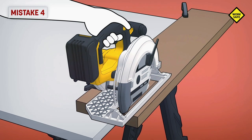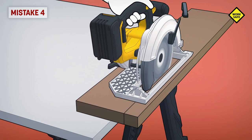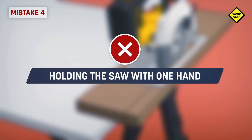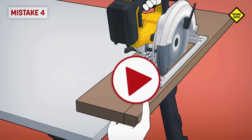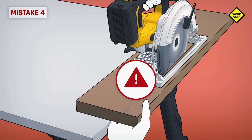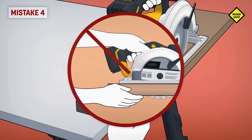Mistake 4: Holding the saw with one hand. Your free hand can accidentally end up in line with the blade. Careful! Don't ever place your fingers under the workpiece. In this position, the guard will not protect you.